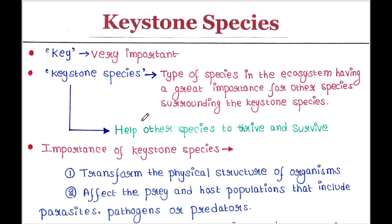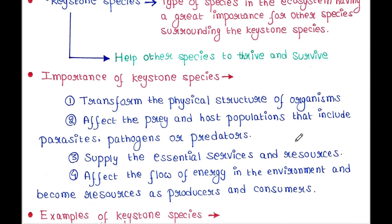Keystone species help other species to thrive and survive. Let's talk about some importance of keystone species. They transform the physical structure of organisms. They affect the prey and host populations, which include parasites, pathogens, or predators. They supply essential services and resources, affect the flow of energy in the environment, and become resources as producers and consumers.